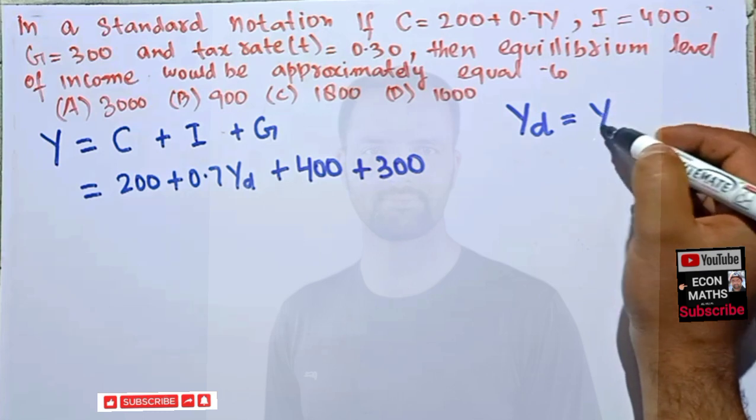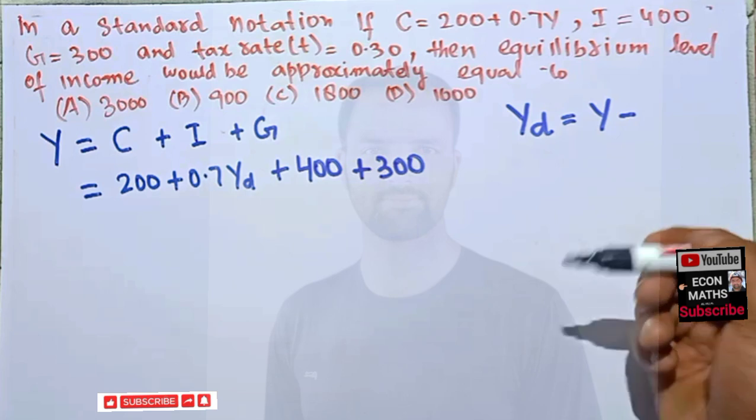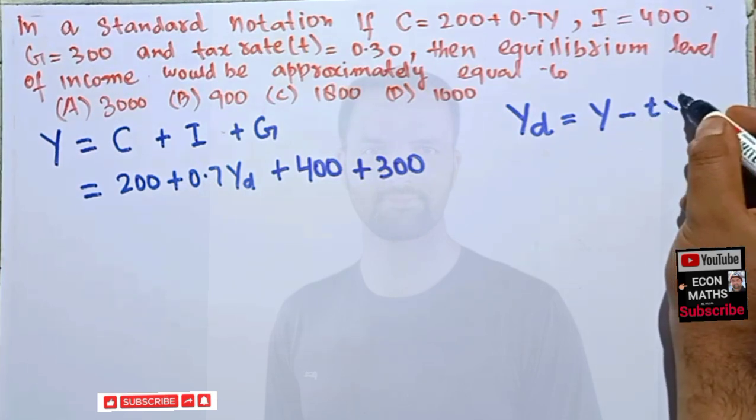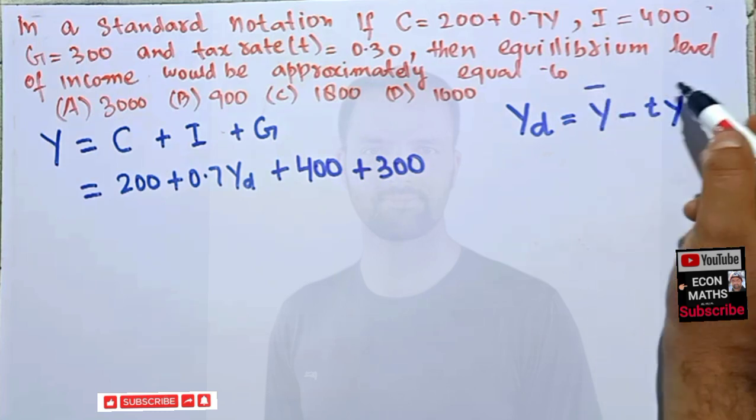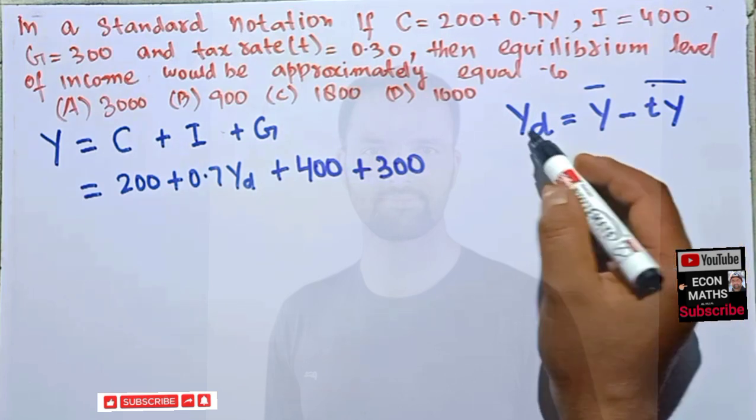Now what is our disposable income? Disposable income is simply the income that is left after the taxes are being paid. That is the tax rate ty, that means income minus tax rate into income gives us disposable income.